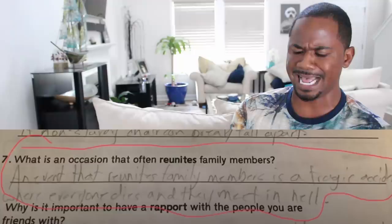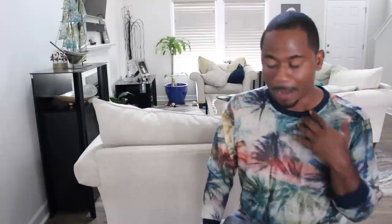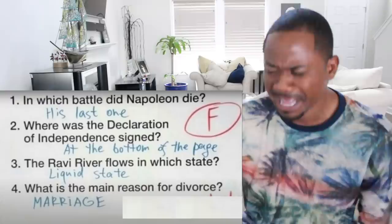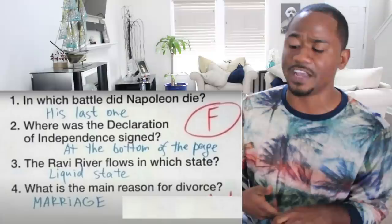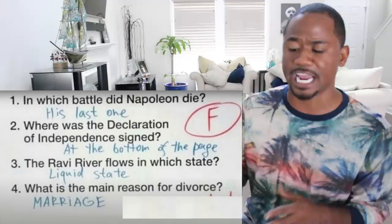'...and they meet in hell.' In which battle did Napoleon die? 'His last one.' Where was the Declaration of Independence signed? 'At the bottom of the page.' The rapid river flows in which state? 'Liquid state.' What is the main reason for divorce? 'Marriage.' A-plus for creativity.